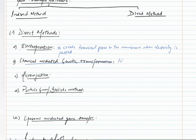In chemical mediated genetic transformation, we use certain chemicals such as polyethylene glycol, known as PEG. This helps in the uptake of foreign DNA into the host cells. There are also other chemicals which can perform the same function.